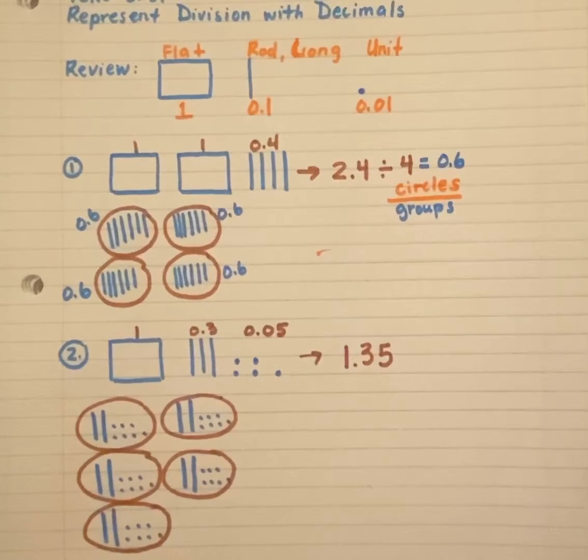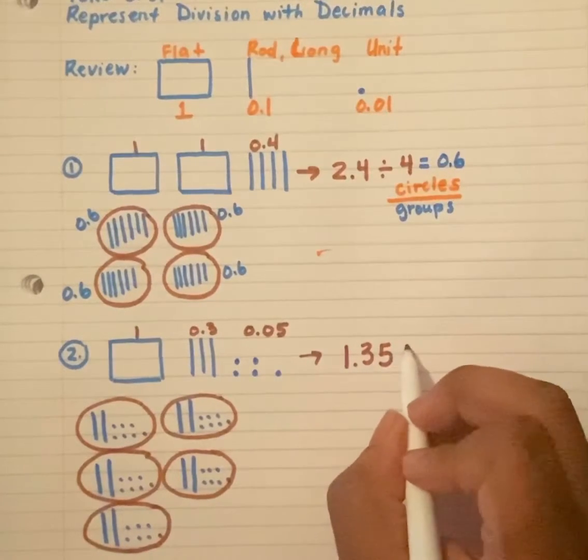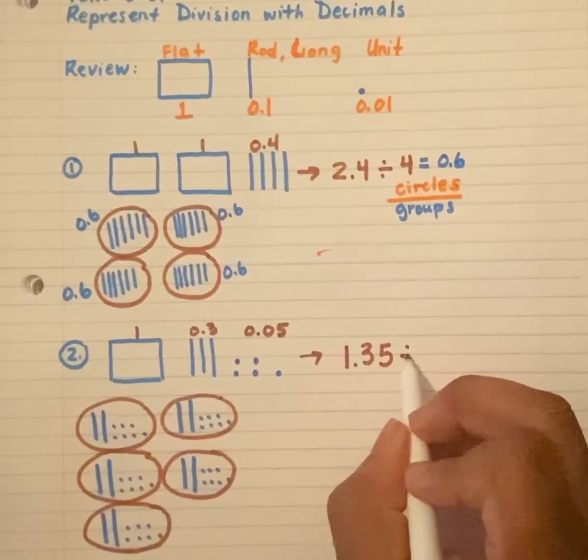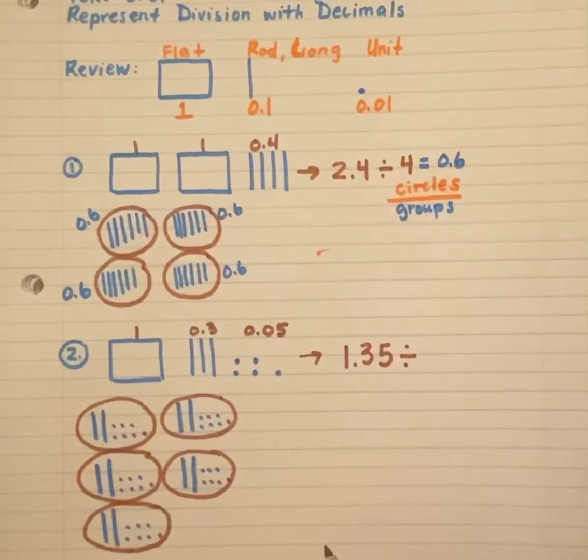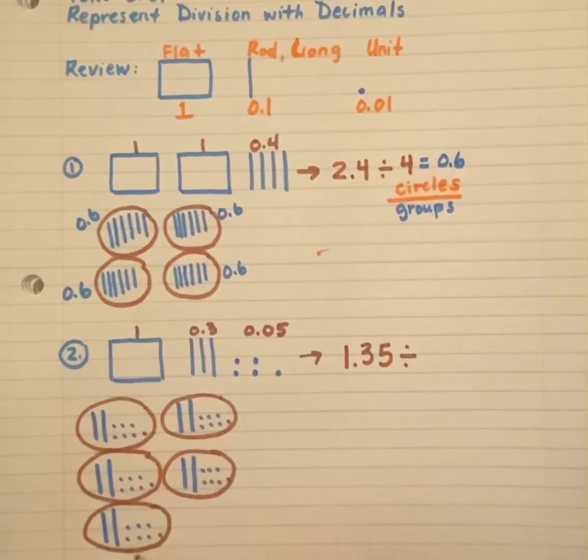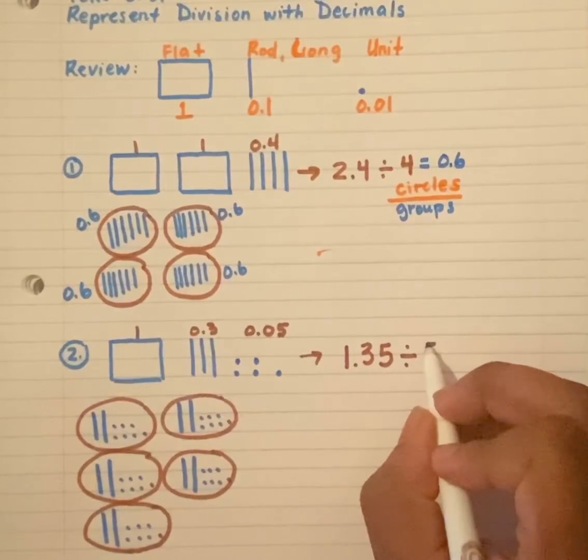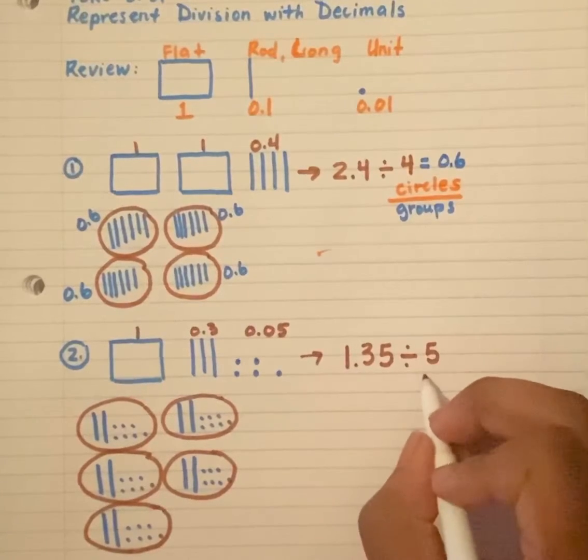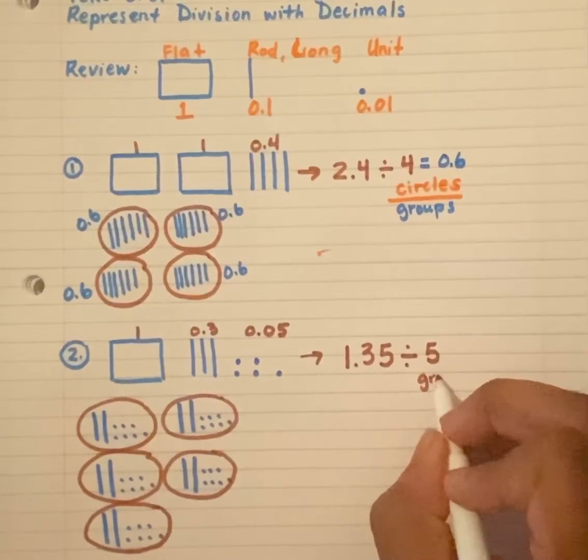We're halfway there. Now we're dividing. How many groups do we have? One, two, three, four, five. We have five groups. Remember, this is our groups.